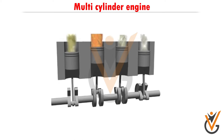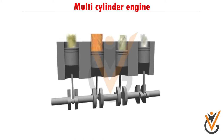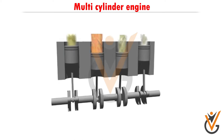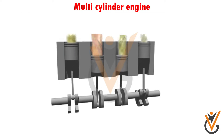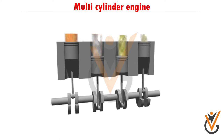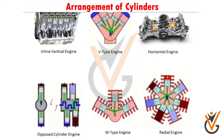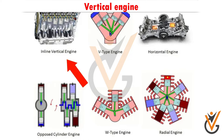Multi-cylinder engines may have 3, 4, 6, 8, 12, or 16 cylinders. On the basis of the arrangement of cylinders, the engine classification includes the vertical engine, in which the cylinders are arranged in a vertical position as shown in the video.